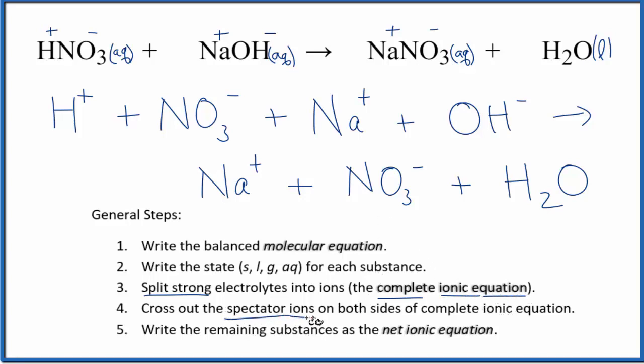We can cross out the spectator ions. These are ions that appear on both sides of the equation. They really didn't change. We started out with NO3, and we still have NO3. So we're not interested in things that don't change. We want to know what actually changed in the reaction. Let's cross these spectator ions out. Here's Na plus, Na plus, cross that out too.